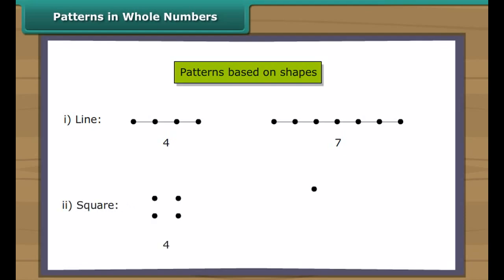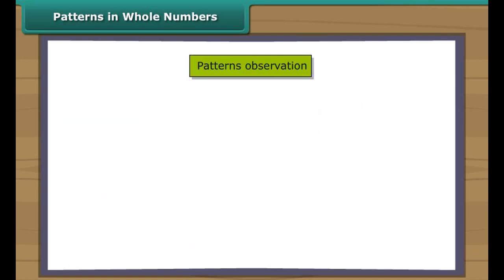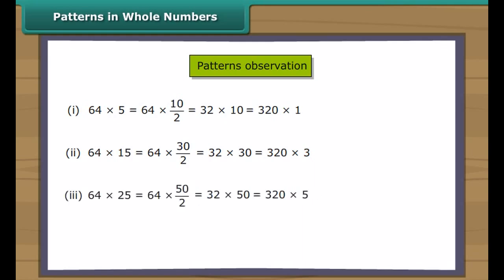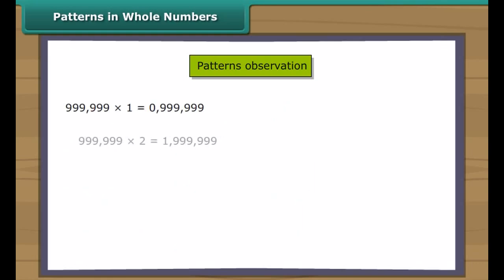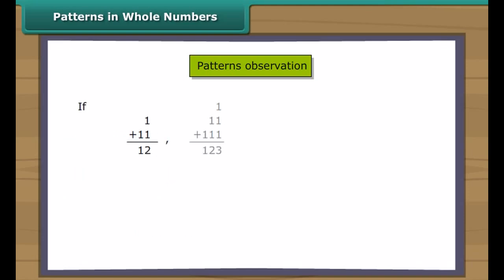Some numbers can be arranged as squares, for example. Some numbers can be arranged as rectangles. Rectangles can be horizontal arrangement or a vertical arrangement, for example. Some numbers can be arranged as a triangle, for example. Sometimes some kind of pattern is observed in whole numbers which can help in simplifying the calculation process. For example. Let's look at another one. One more example.